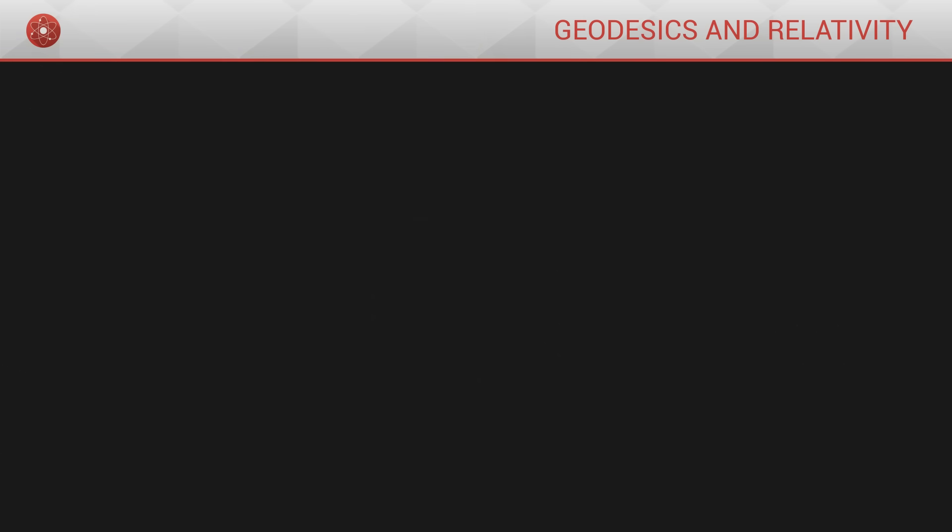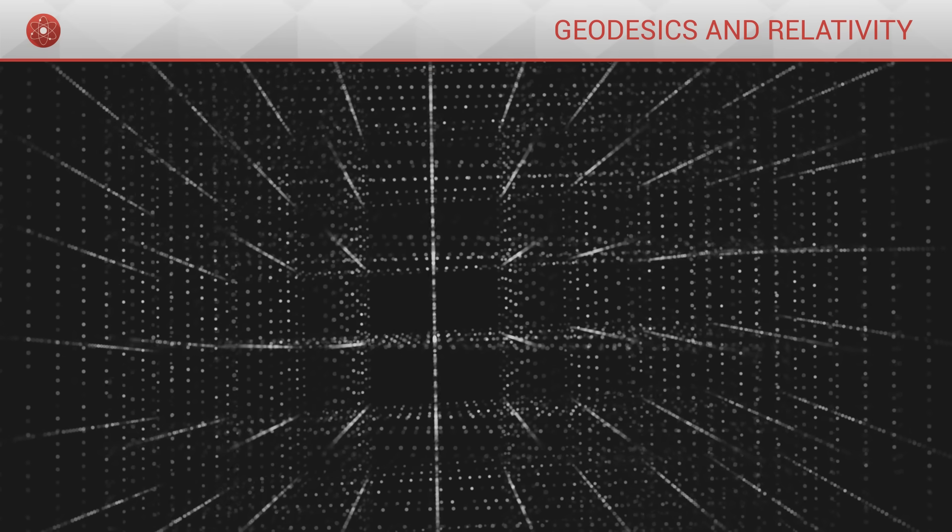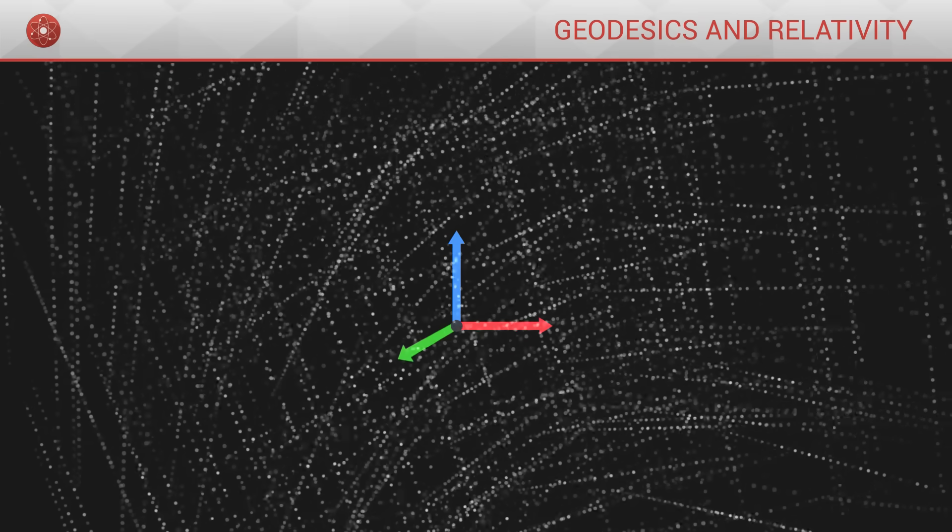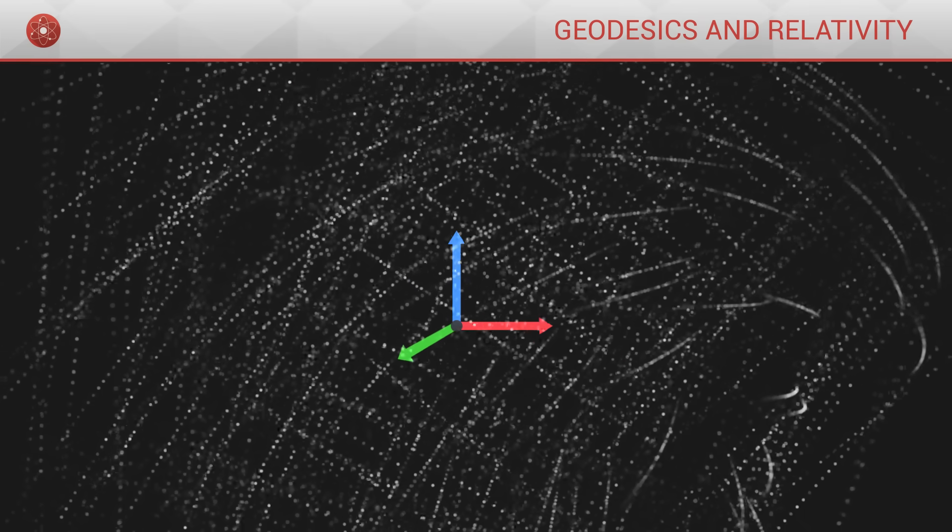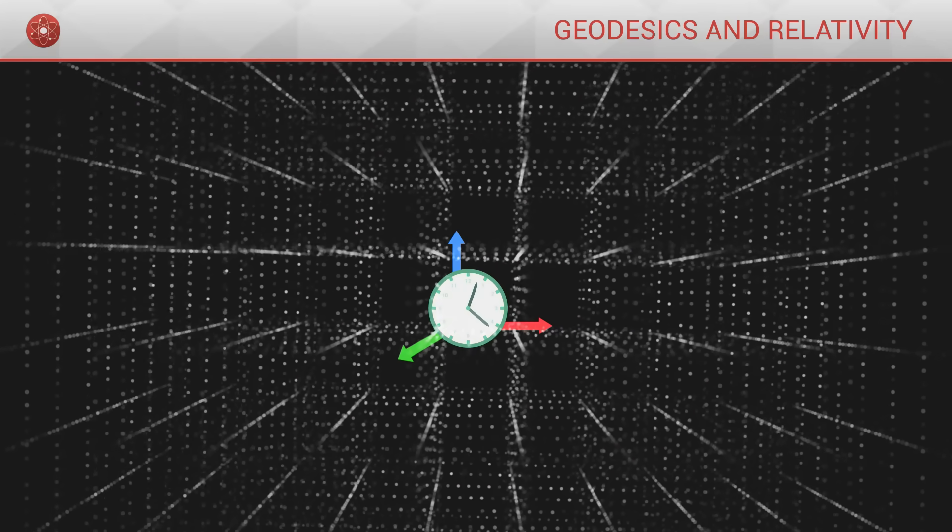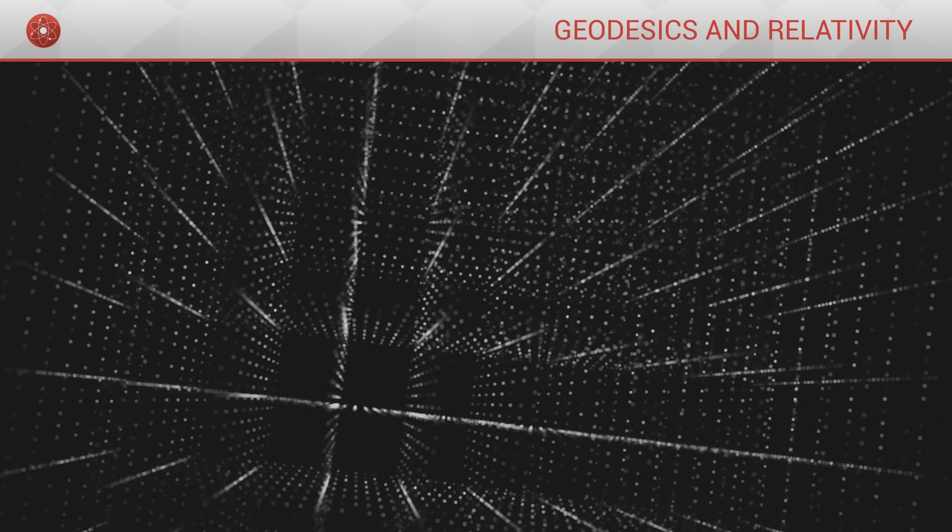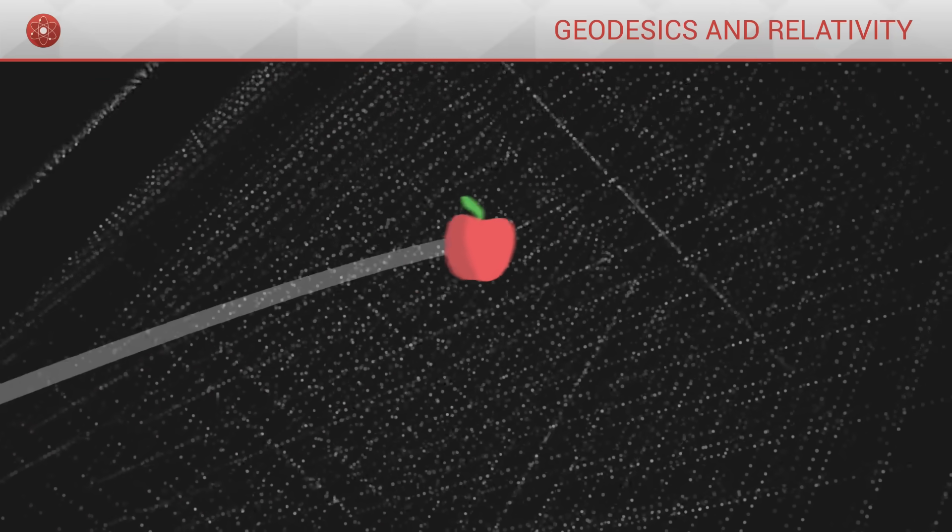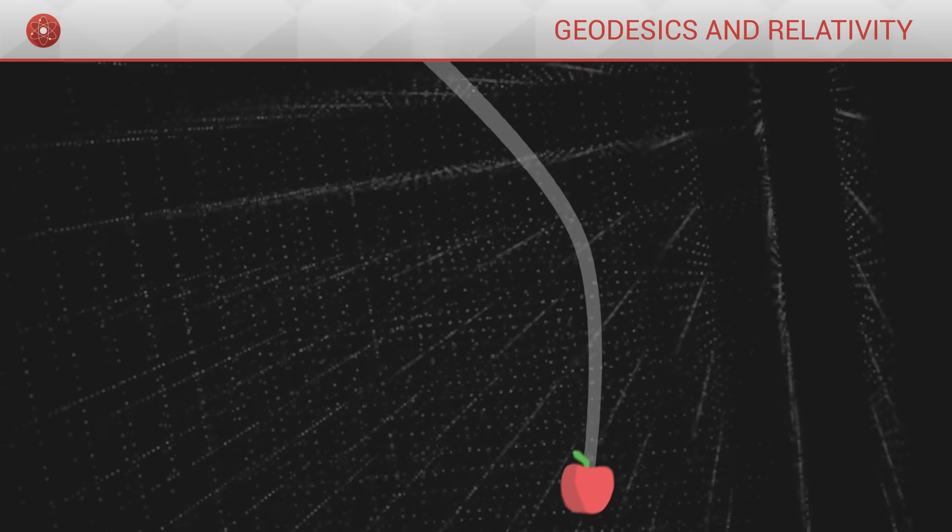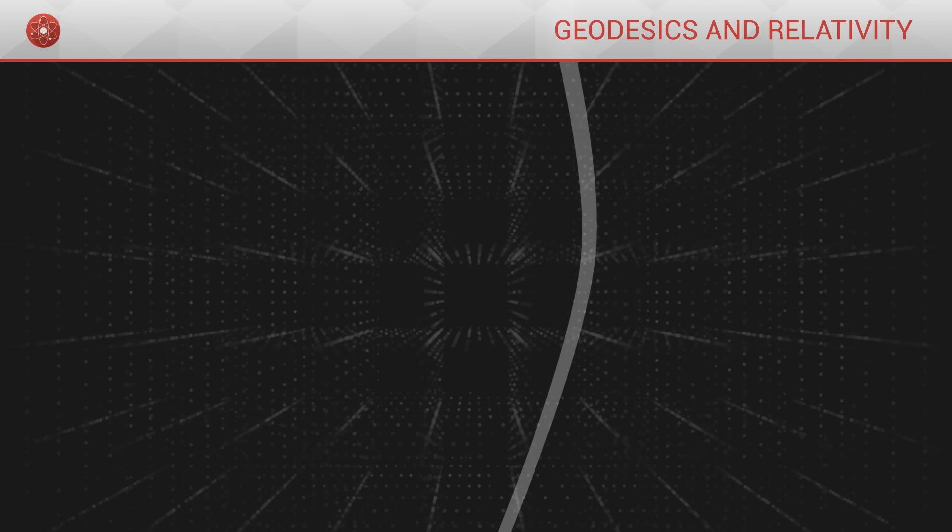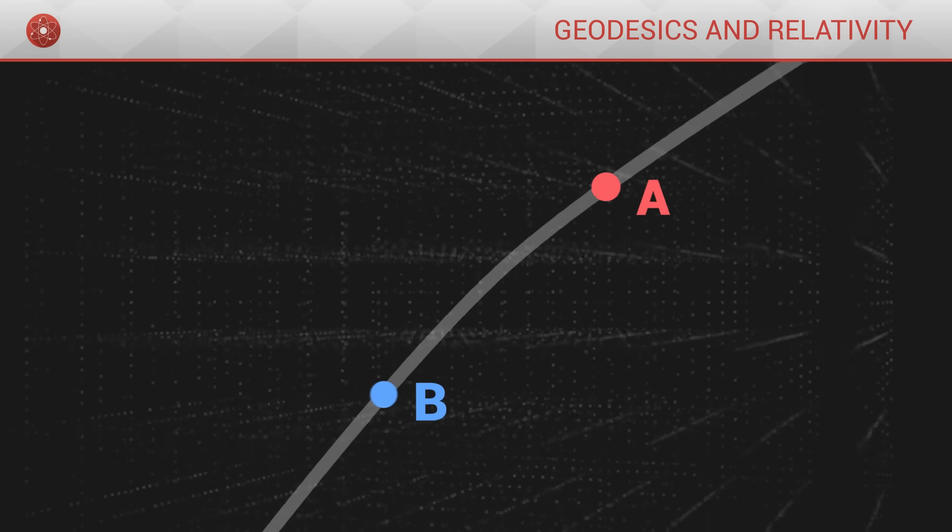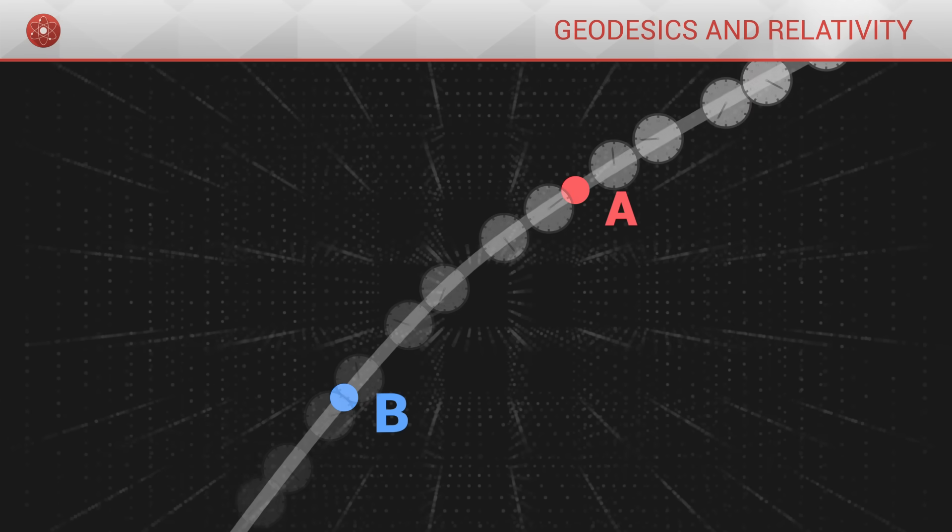The universe in which we live is not a two-dimensional surface. It is a hypersurface with four dimensions. Three dimensions of space and one of time. This is space-time. All objects in the universe evolve through space-time in the same way that the ant walks on the sphere. But in space-time, the distance between two events is not only their distance through space, but also through time.